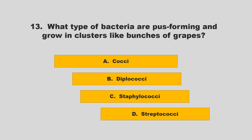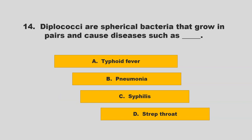What type of bacteria are pus-forming and growing in clusters like bunches of grapes? Options: cocci, diplococci, staphylococci, or streptococci. The correct answer is C: staphylococci.